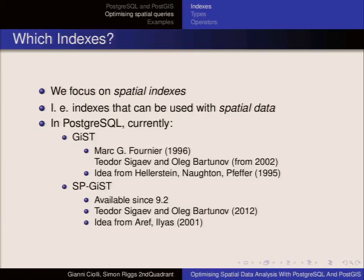Currently in Postgres there are two different kinds of spatial indexes. There's GIST, which is probably not unknown in this room. And SPGIST, which is similar to GIST but space-partitioned — this is very recent, even the theory is recent. It has advantages and disadvantages that we will discuss. If you do spatial things with Postgres you will be using lots of GIST and some SPGIST as well.